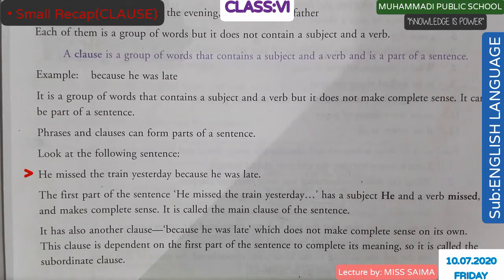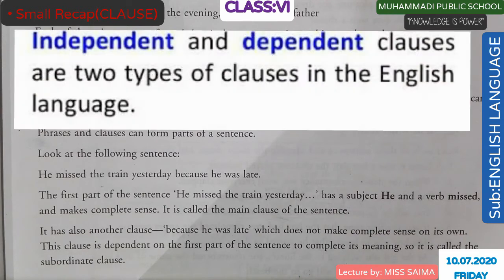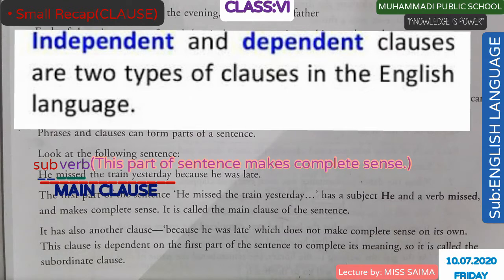Look at the following sentence: 'He missed the train yesterday because he was late.' The first part of the sentence, 'He missed the train yesterday,' has a subject 'he' and a verb 'missed' and makes complete sense. So it is called the main clause of the sentence.